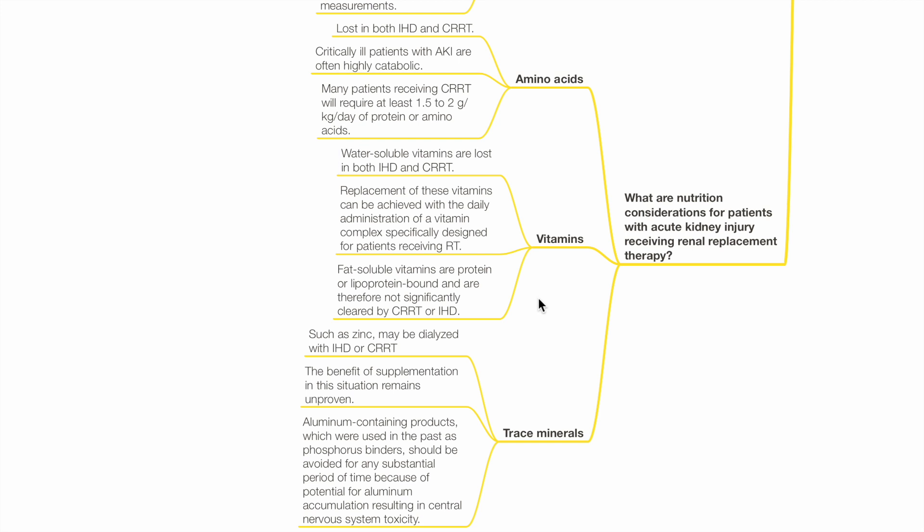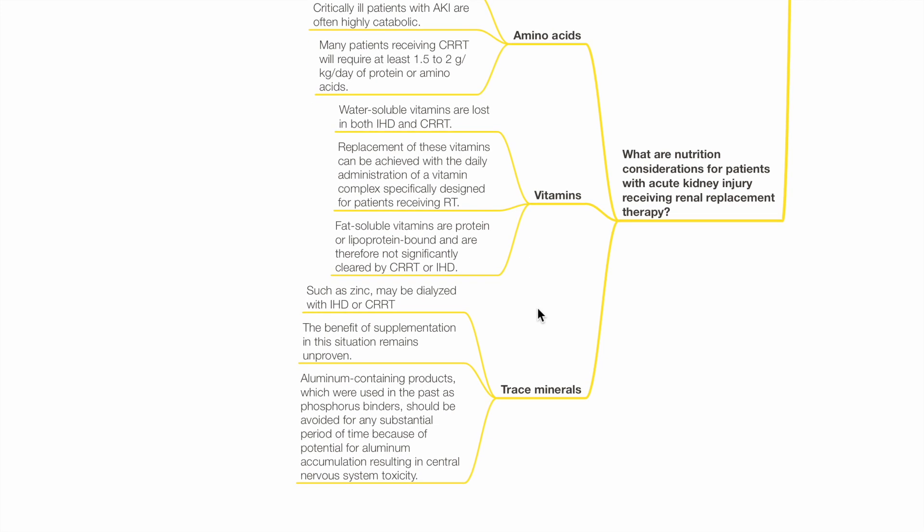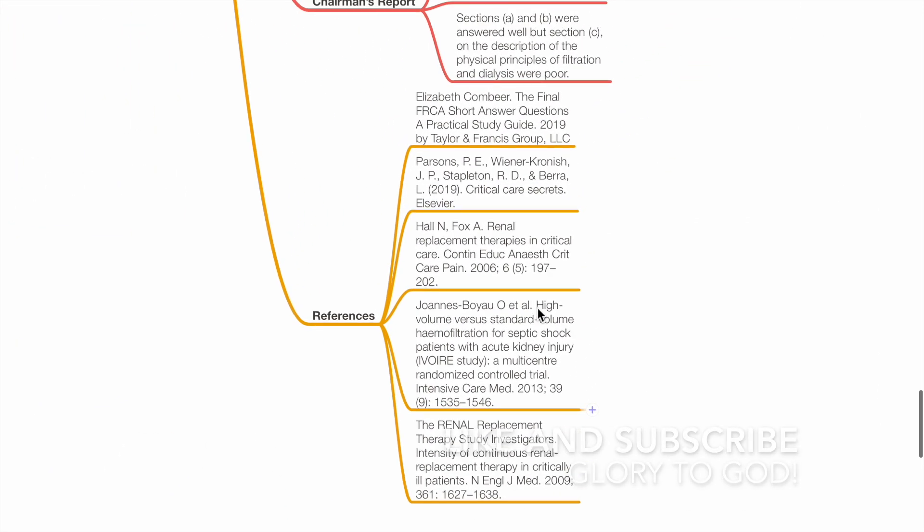Trace minerals such as zinc may be dialyzed with renal replacement therapy. The benefit of supplementation in this situation remains unproven. Aluminum containing products which were used in the past as phosphorus binders should be avoided for any substantial period of time due to potential of aluminum systemic toxicity. These are my references. Thank you.